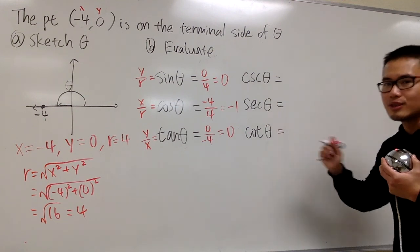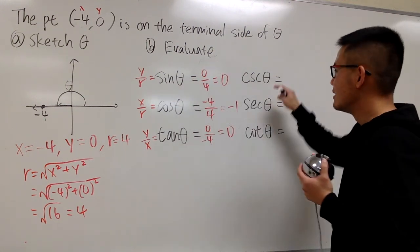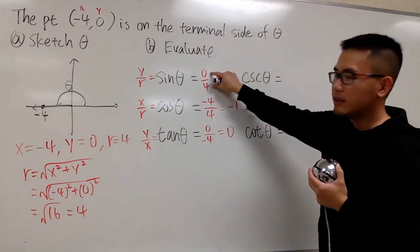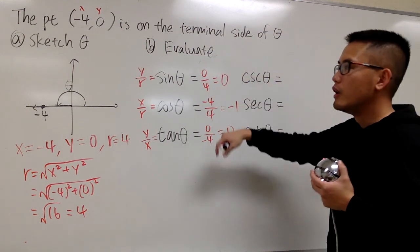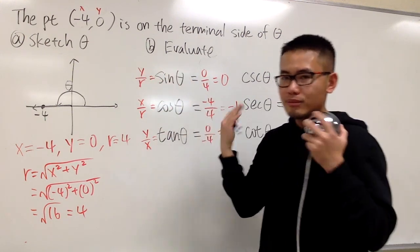And then for these three functions, these are just the reciprocals of these, right? So, for cosecant θ, we can look at this and do the reciprocal. Or we can look at this and do the reciprocal, and set it up again. Up to you.